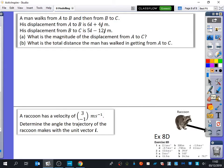It says, a man walks from A to B and then from B to C. His displacement from A to B is 6i plus 4j. And his displacement from B to C is 5i minus 12j. Then it says, what is the magnitude of the displacement from A to C? And then it says, what is the total distance the man has walked in getting from A to C?